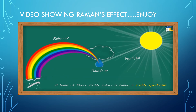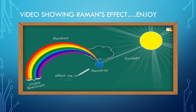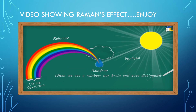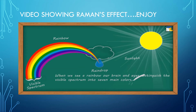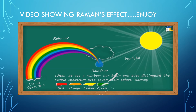When we see a rainbow, our brain and eyes distinguish the visible spectrum into seven main colors, namely red, orange, yellow, green, blue, indigo, and violet.